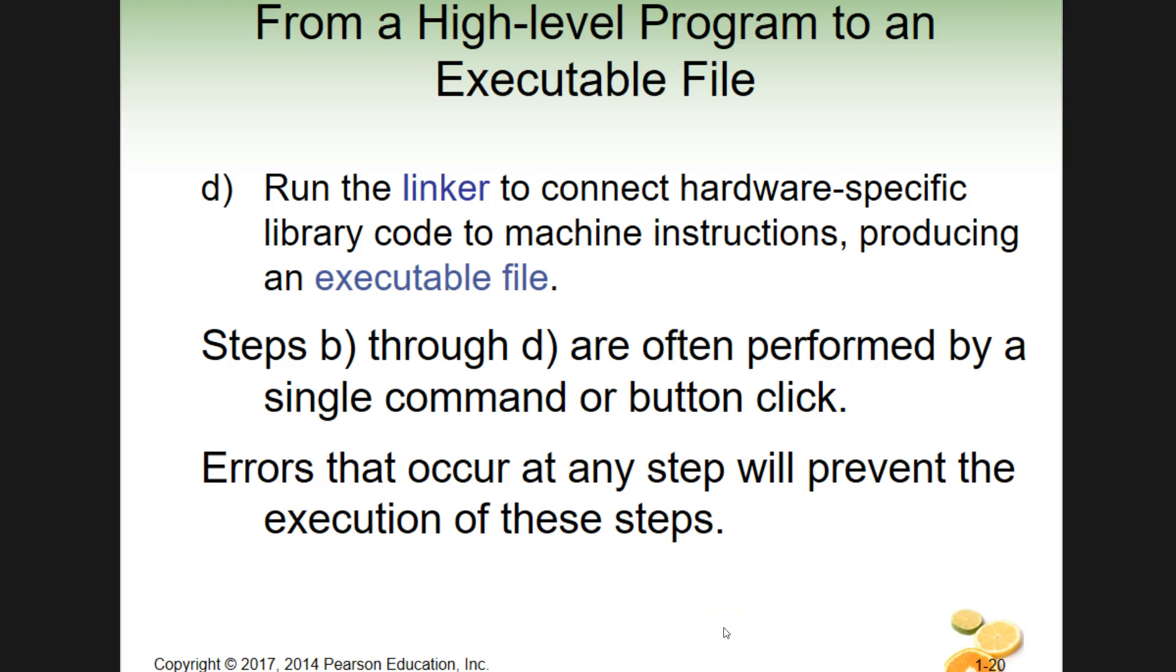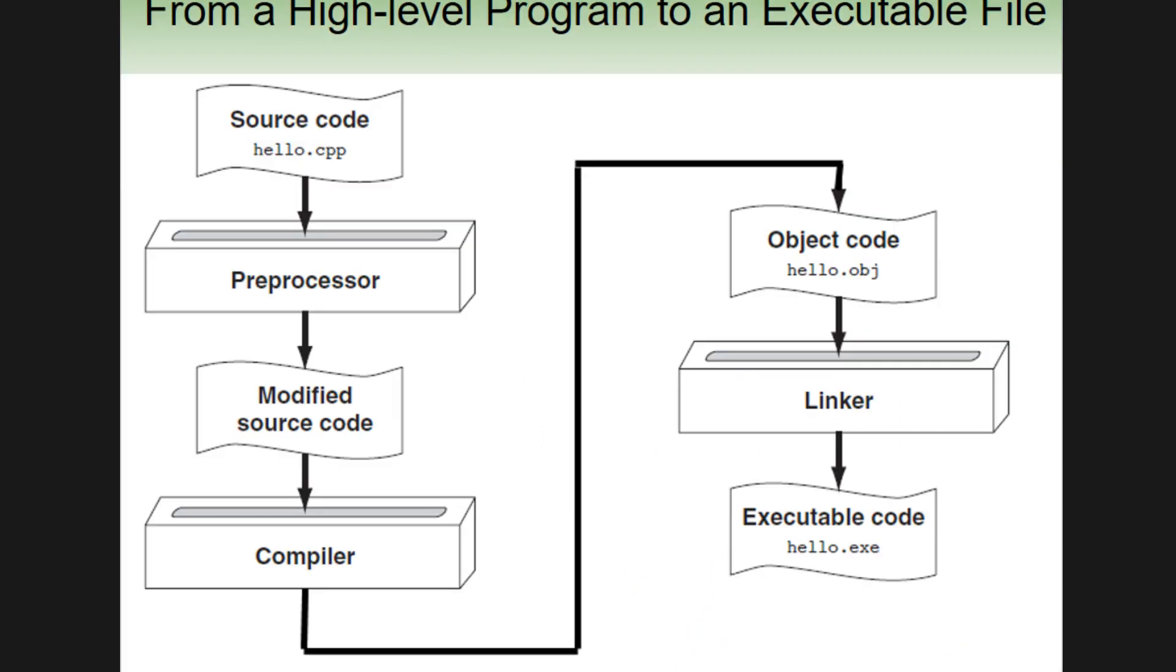You'll see this kind of firsthand as we walk through these things. Errors along the way will prevent this from working. Certain types of errors. We'll talk about a couple different types of errors here in a sec. Here's our graphic just flowing through the process. We're just clicking a button and letting the computer do the work for us on the translating side to get down to a piece that we can use and that it can use too.